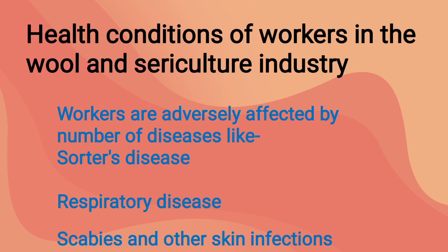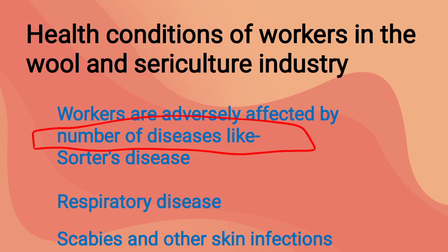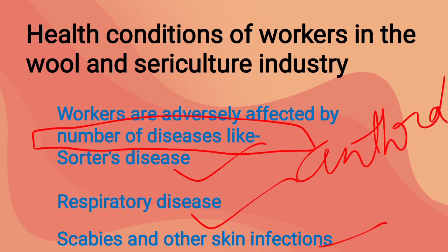There are many adverse health effects on workers in the wool and sericulture industries. Diseases like sorter's disease, respiratory disease, scabies, and other infections are seen in workers. Sorter's disease in the wool industry is caused by the bacterium anthrax. Respiratory diseases, scabies, and other skin infections are also caused in the silk industry.